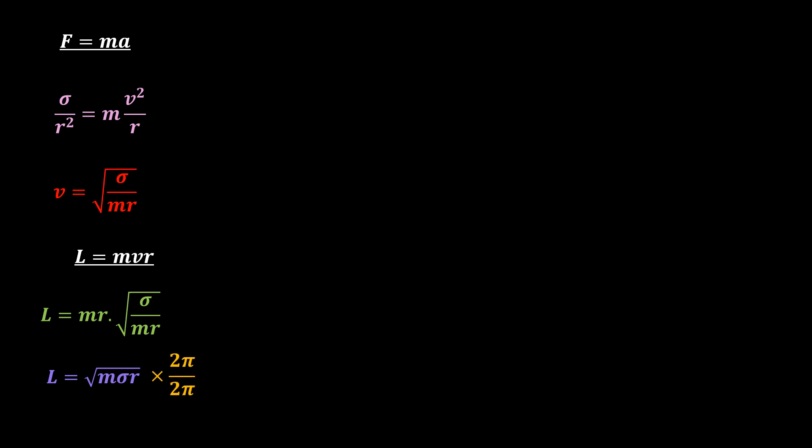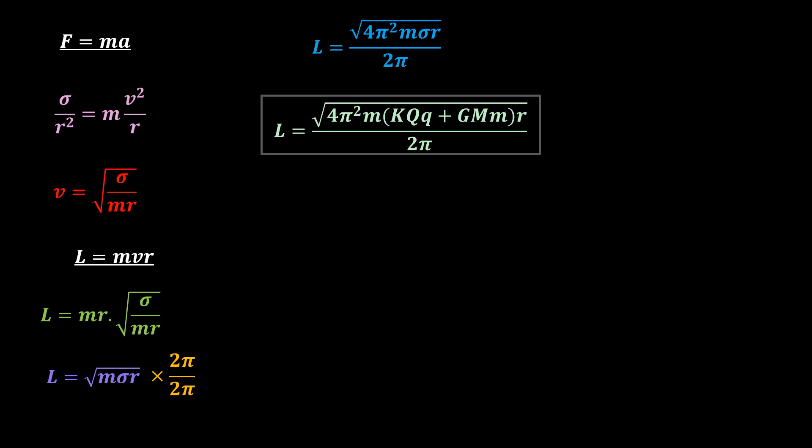If we multiply and divide by 2 pi, we have this. When you sub in the expression for sigma, you get the full form of the equation.